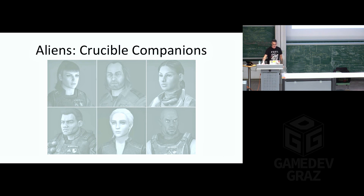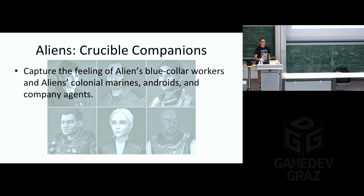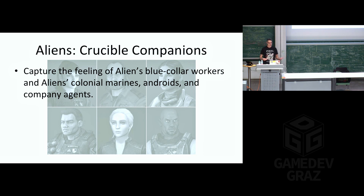I worked on a canceled Aliens project called Aliens Crucible — an RPG based on the Aliens franchise — and there were certain things I wanted to accomplish in terms of character designs. In the original Alien, all the characters were blue-collar workers — laborers on an ore refining ship, talking about union dues and shares. I wanted their outfits to be very practical and blue-collar looking. Aliens — James Cameron's Aliens — had colonial Marines, androids, and company agents, and I wanted to evoke the feeling those characters gave. A key word I used was that they should feel "grounded" — not fantastic, but like common people working in this environment. But we also wanted to avoid feeling dated, since Alien was made in the late 70s and Aliens in the mid-80s. We wanted to update them without losing the spirit of the franchise.